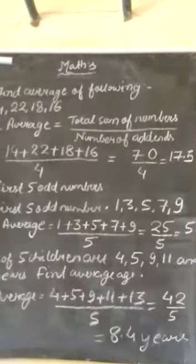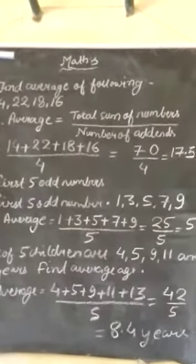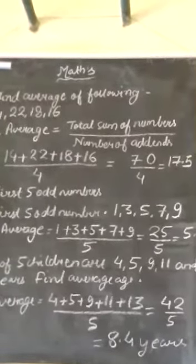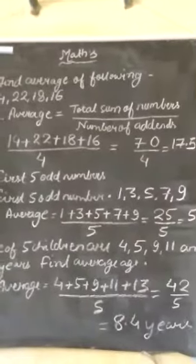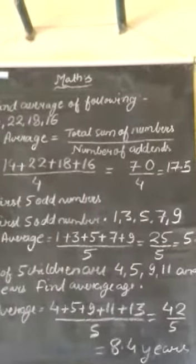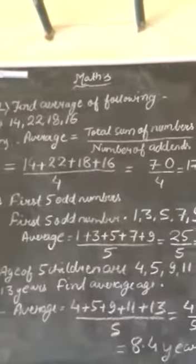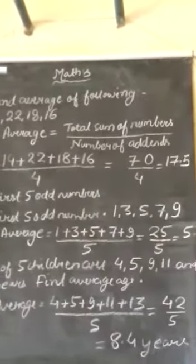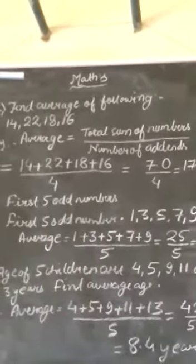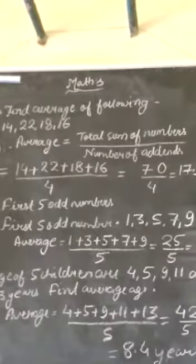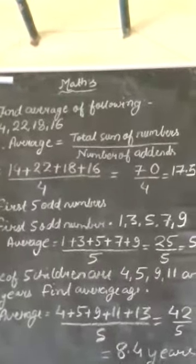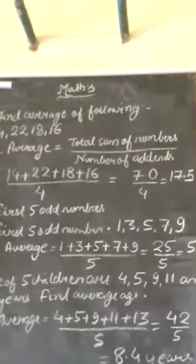So first we add the total given data or we find the sum of given total sum of numbers. Then we divide the number of addends. Here our number 14, 22, 18 and 16. We add and then divide it by 4. Because our numbers will be 4. 14, 22, 18 and 16. So when we add total sum it will be 70, we divide it by 4.